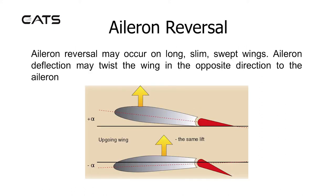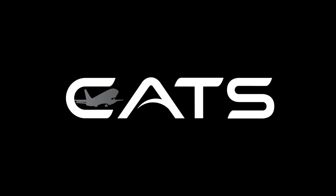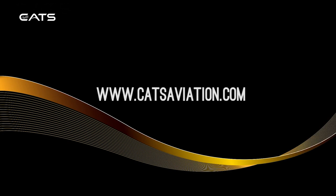Aileron Reversal. Aileron reversal may occur on long, slim, swept wings. Aileron deflection may twist the wing in the opposite direction to the aileron.